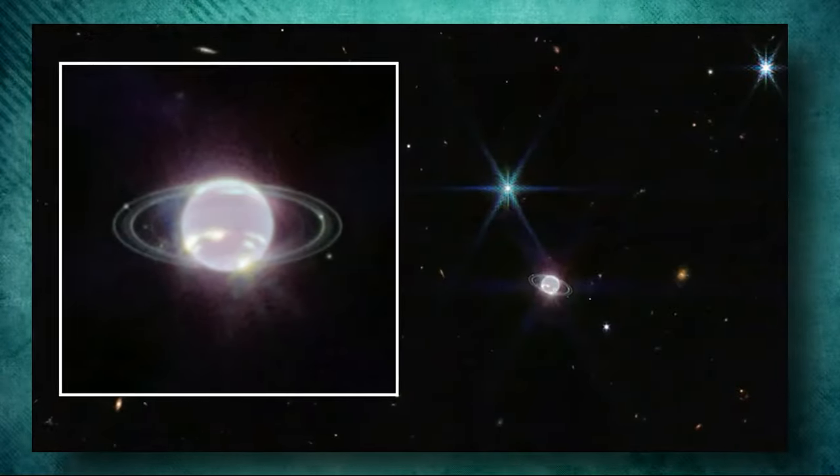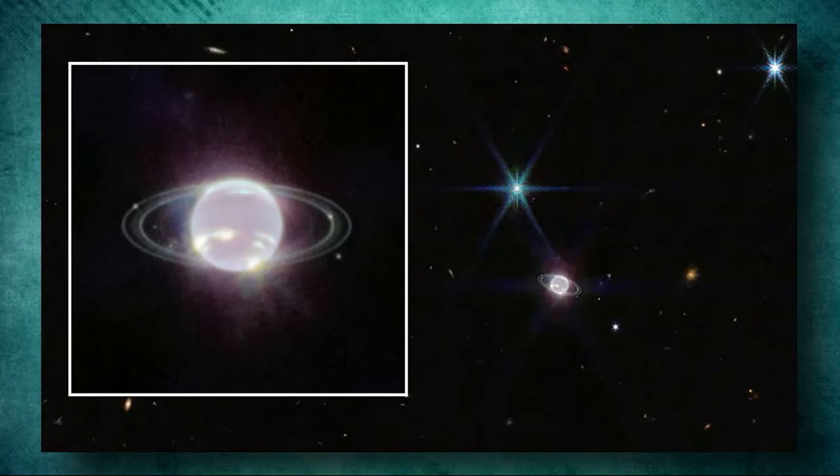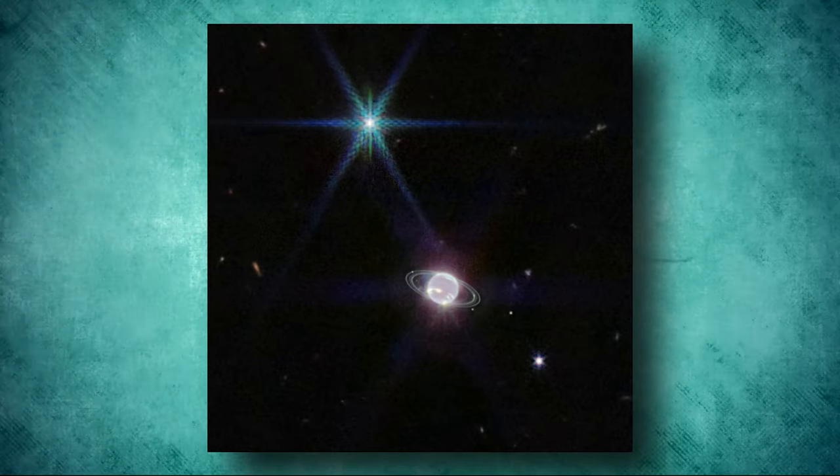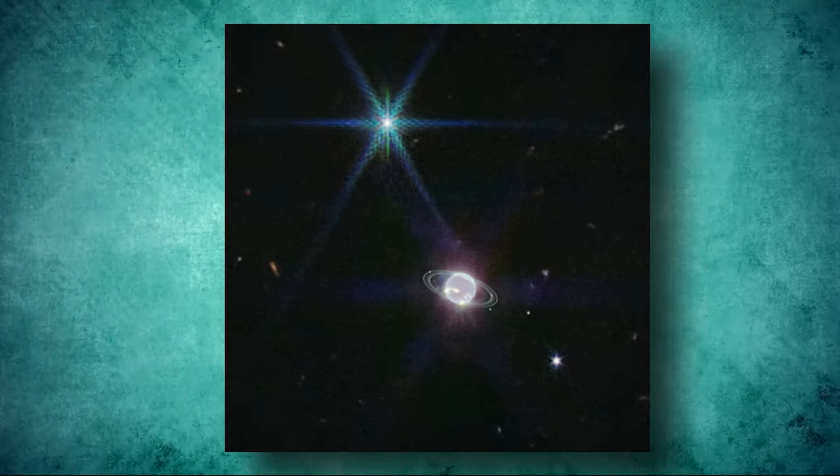In addition to the rings and dust bands, the image also shows Neptune's largest moon, Triton, appearing as a bright point of light surrounded by diffraction spikes, and seven of Neptune's 14 known moons visible in the background.